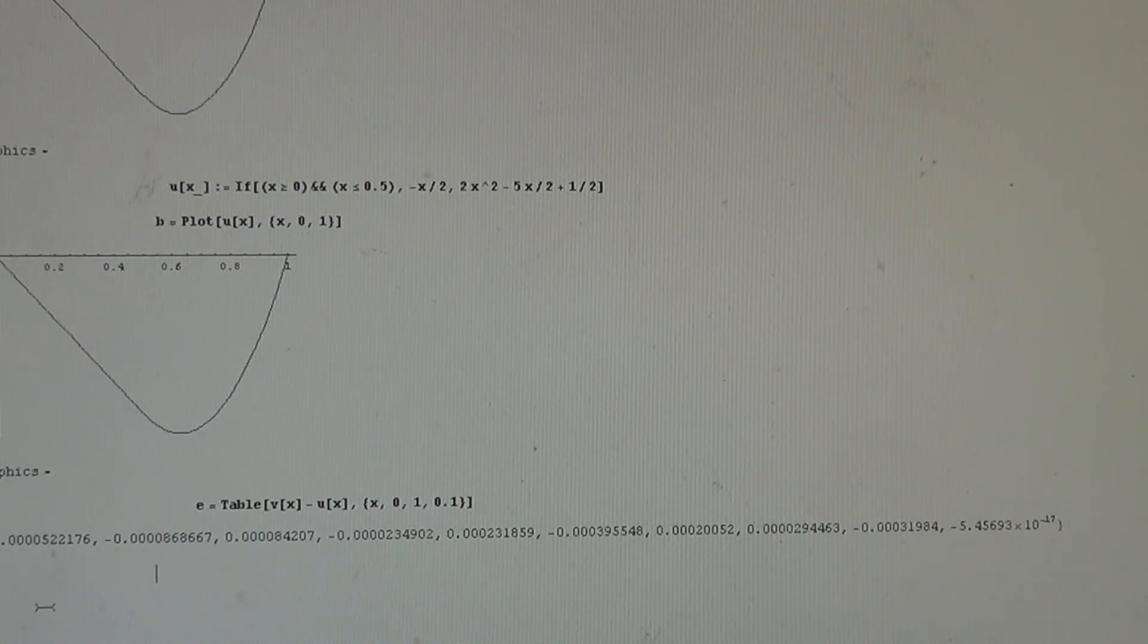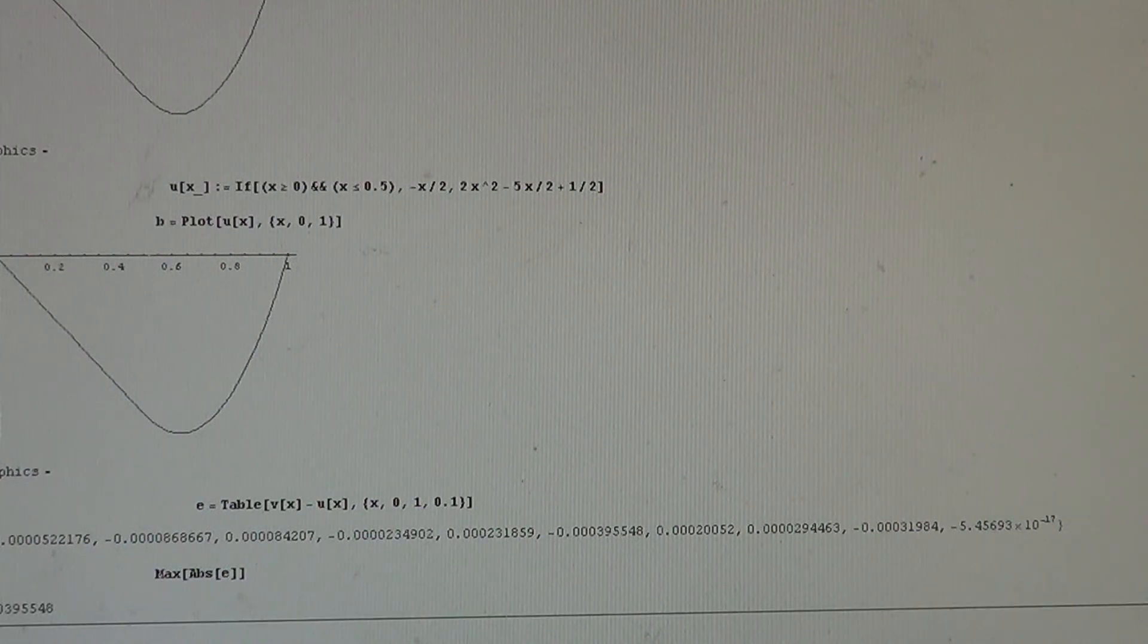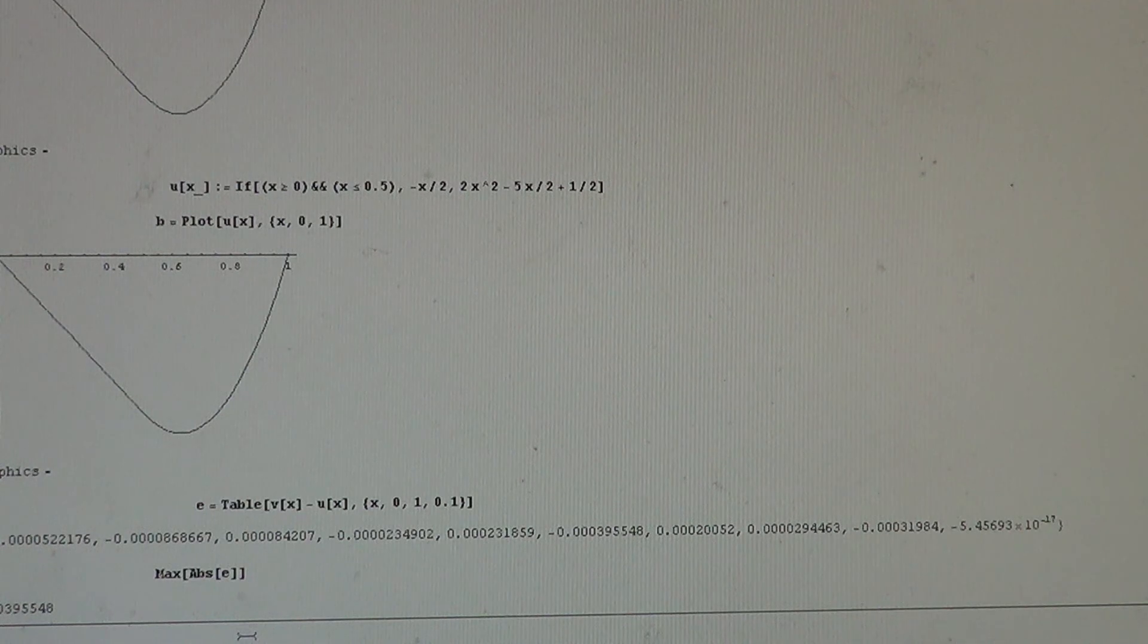Let us see the maximal error, what is the maximal error, maximum, we have the maximum, we have the command of the absolute value of E, because that is under E. And we have, that is 0.0004, as we have mentioned before. Thank you.